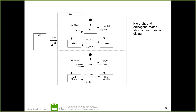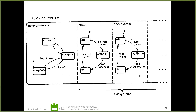Now look at the same state machine using concurrent state machines — much simpler. Using two concepts, hierarchy and orthogonal state machines: first, I have one super state called On and another state called Off. When the light is on, I have two state machines in parallel — one that controls the light color: red, green, or yellow — and another that controls the style: steady, flashing slowly, or flashing quickly. This is much easier to understand and far more organized than a single state diagram with no hierarchy, showing how concurrent state machines can represent a whole system cleanly.